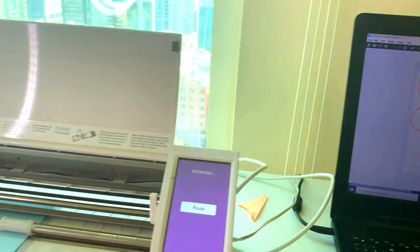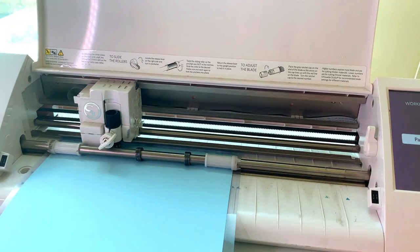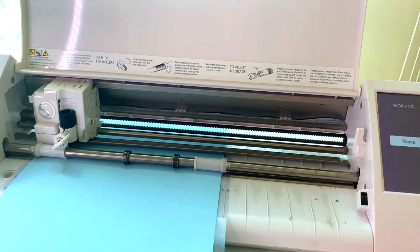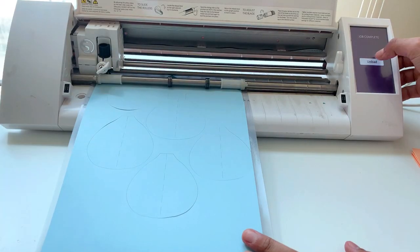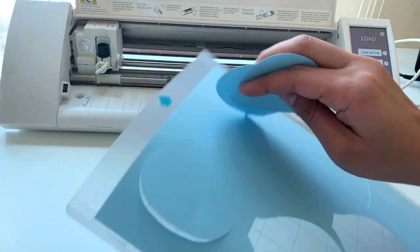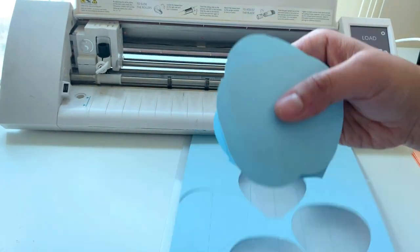This is how I do it: I have already fed the hot air balloon template files to my laptop, then I send the files to Cameo for cutting. Once the cutting is finished we can unload the mat and take out the paper. Thus we got perfect cutouts.